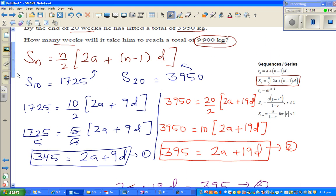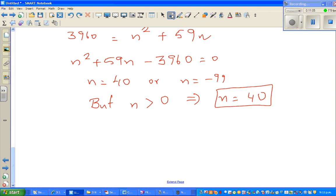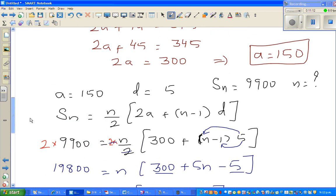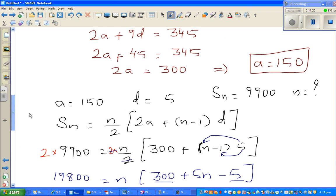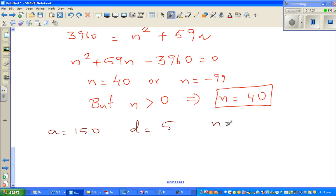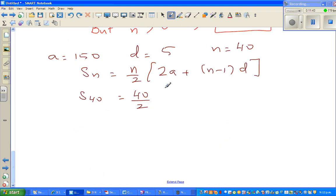Let us check the answer. It's always good to check. A was 150, d was 5, and n is 40. Let me rewrite the formula: Sn is n over 2 times (2a plus (n minus 1) times d). So S40 would be 40 over 2 times (2a which is 300 plus 40 minus 1 which is 39 times 5).